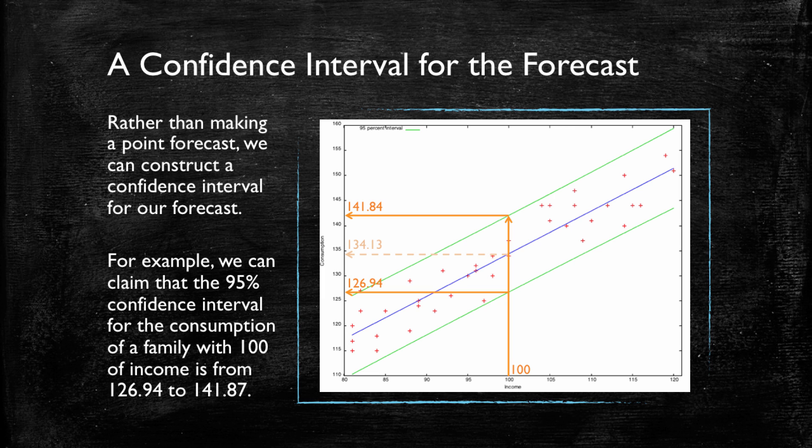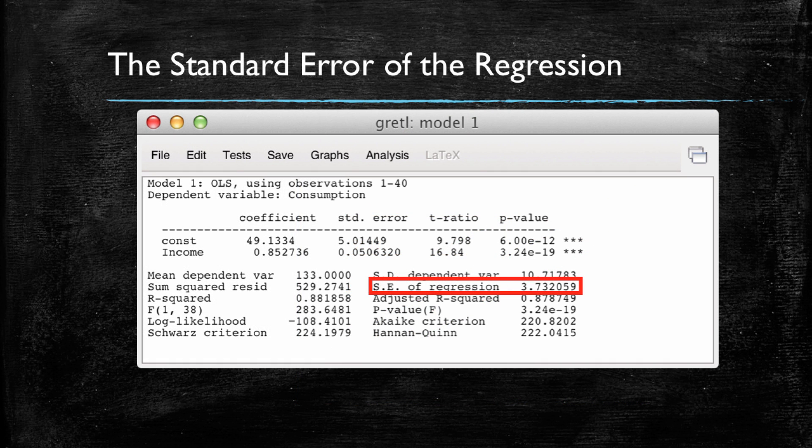The next question will be, how do we construct this confidence interval? Remember that one of our metrics to evaluate the model's fit, which was how good a model fitted our reality, was the standard error of the regression. That is a measure of what we cannot explain through our model, but that is occurring in reality. We can use this, and in the same way in which we constructed a confidence interval for the slope coefficient, we can construct a confidence interval for our estimate. And in this case, we had a standard error of the regression of 3.73. So how can we use this 3.73 to construct our confidence interval?